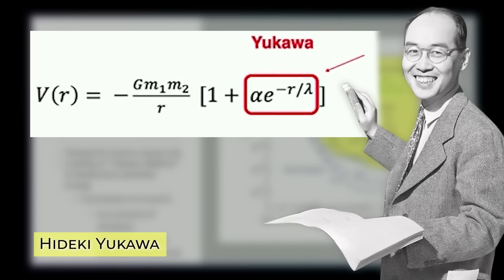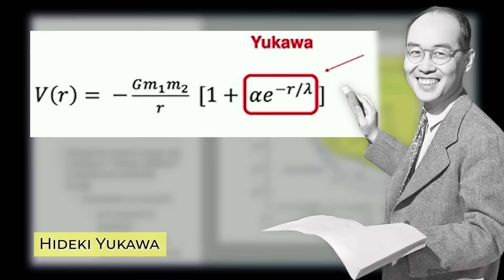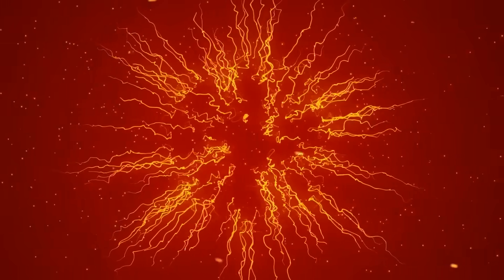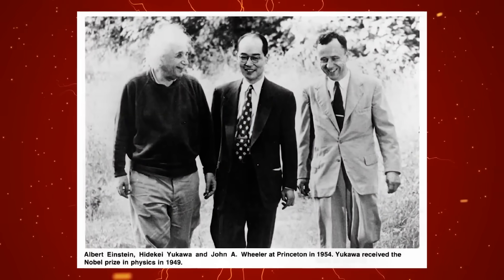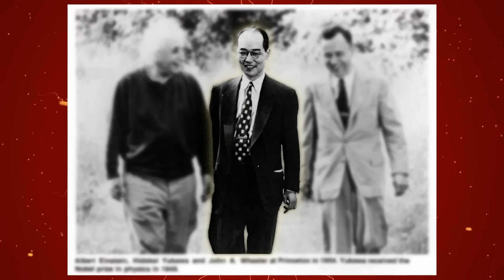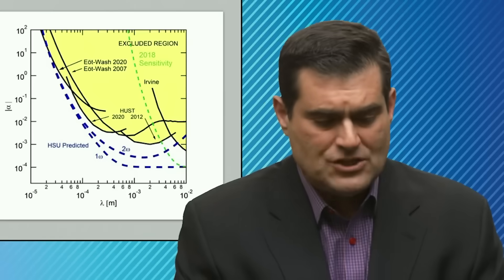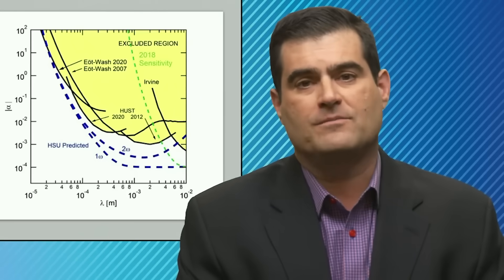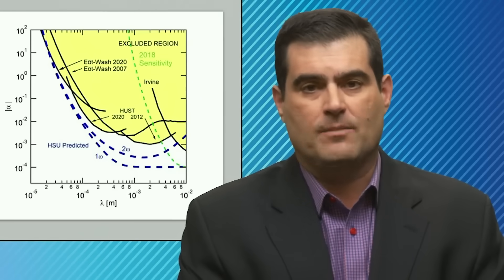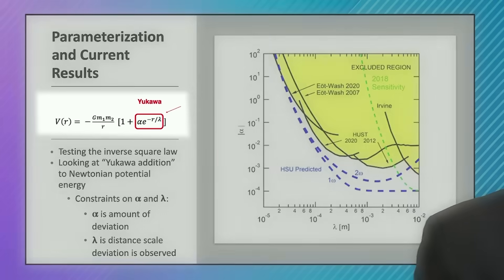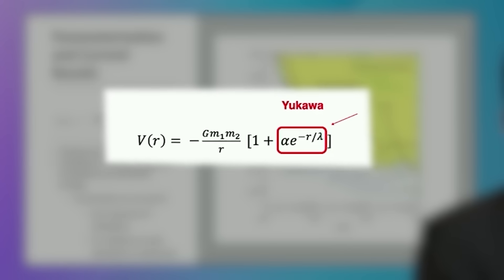Yukawa predicted the behavior of subatomic particles and the strong nuclear force, pions and so forth, that was governed by a Yukawa term that fell off as an exponential, not as an inverse power law. By modifying the coupling from just being one inside the square brackets to being one plus this exponentially decaying term,